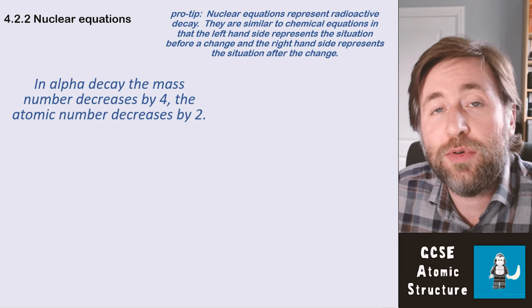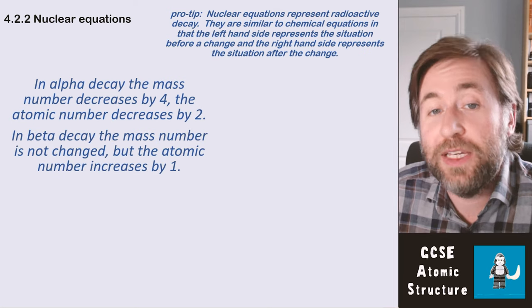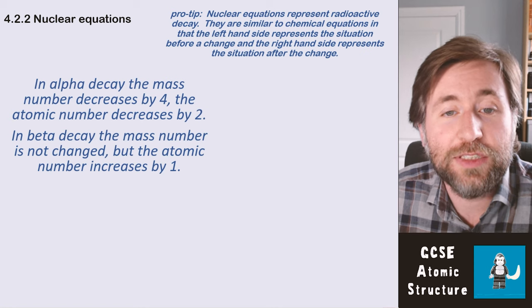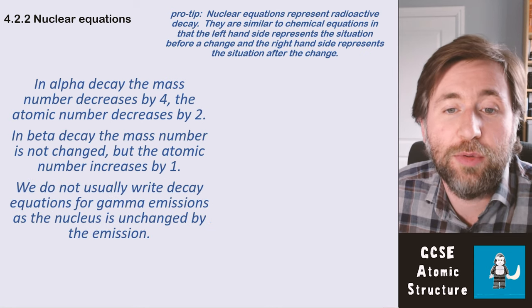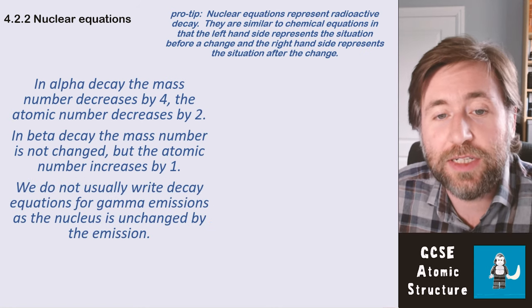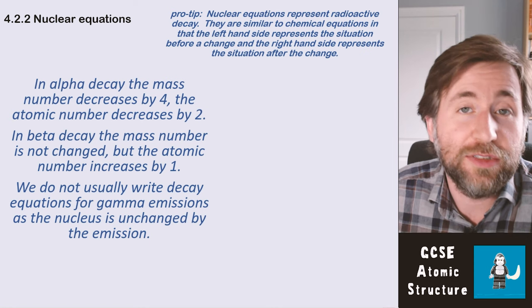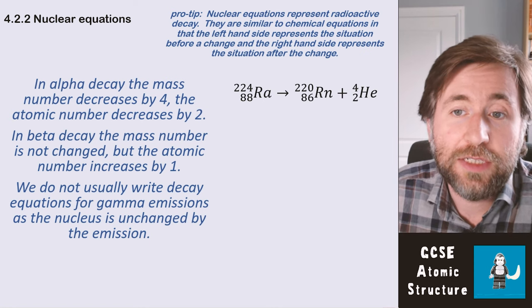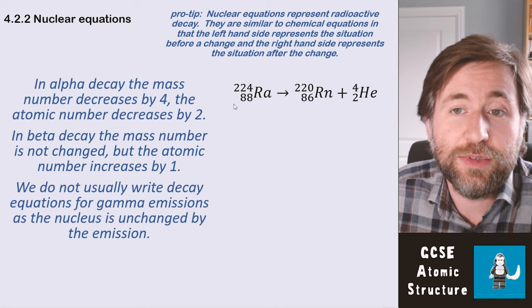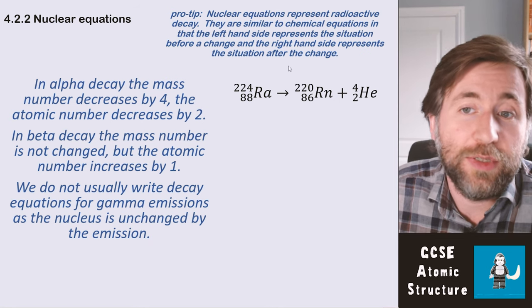In alpha decay, the mass number decreases by four and the atomic number decreases by two. In beta decay, the mass number is not changed but the atomic number increases by one. We don't tend to write a decay equation for gamma because the nucleus is not changed.